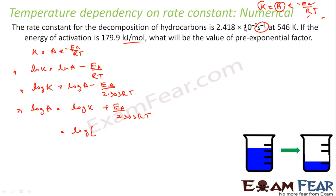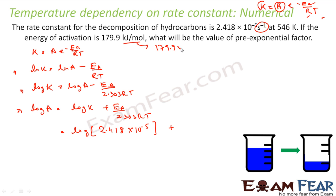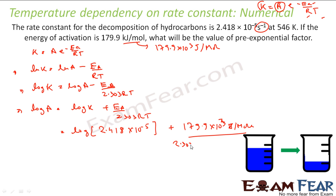Let's put the values here. Log of k — k is given in per second — 2.418 into 10 to the power minus 5, plus Ea. Ea is given as 179.9 kilojoule, so we have to convert it to joule first. That becomes 179.9 into 10 to the power 3 joule per mole. Please note this has to be in joule per mole. Divide by 2.303, R is 8.314, and T is my temperature in kelvin, that is 547.